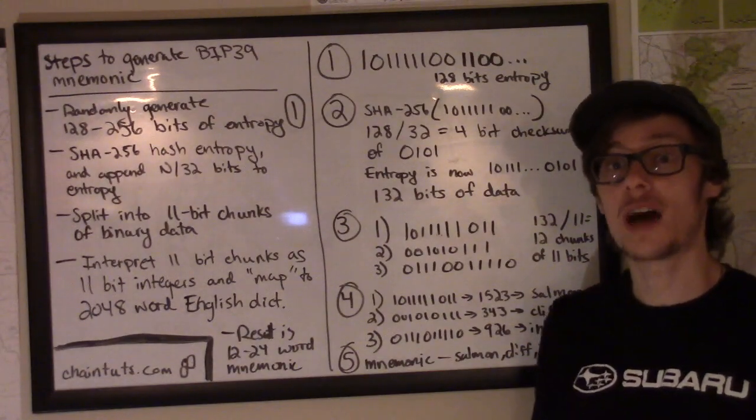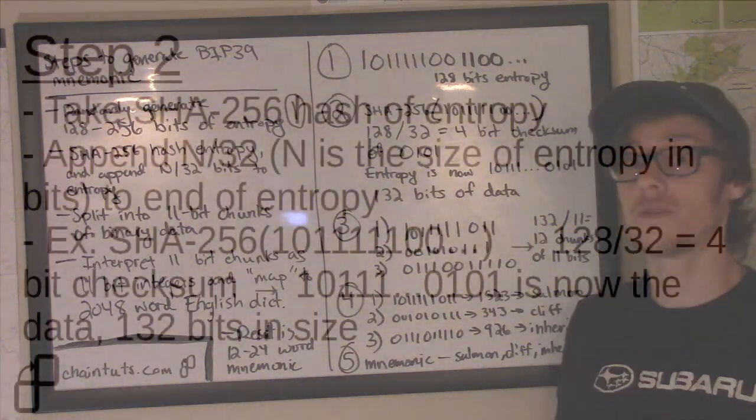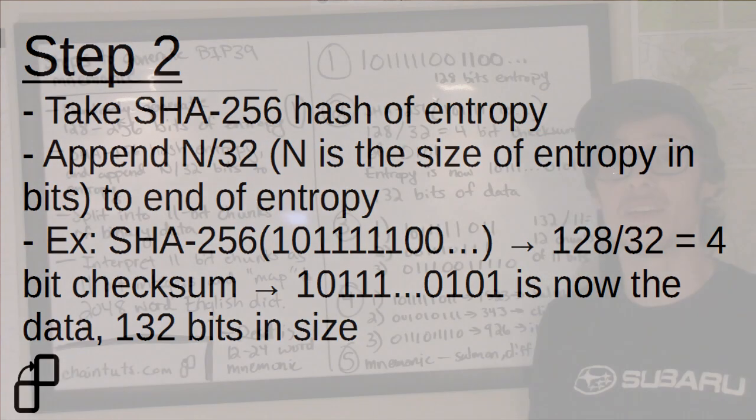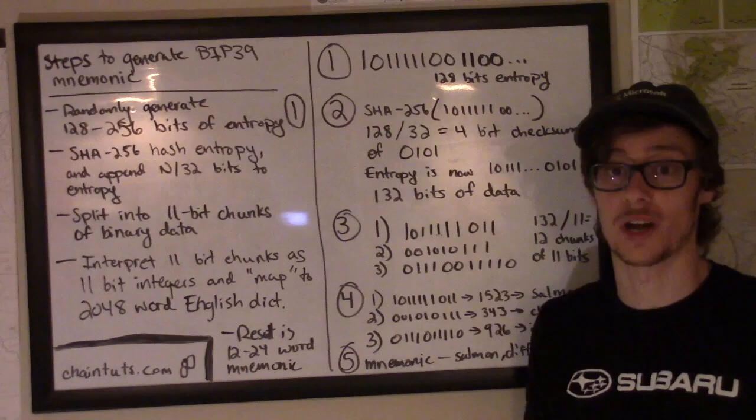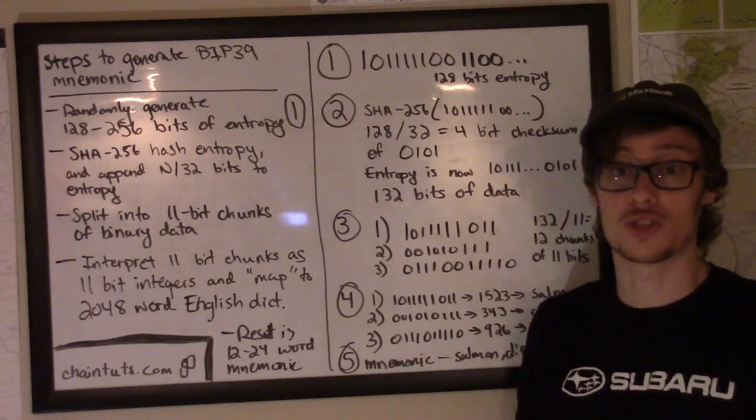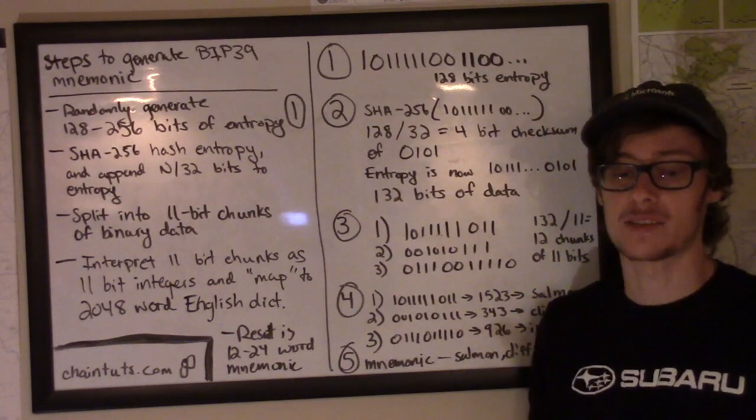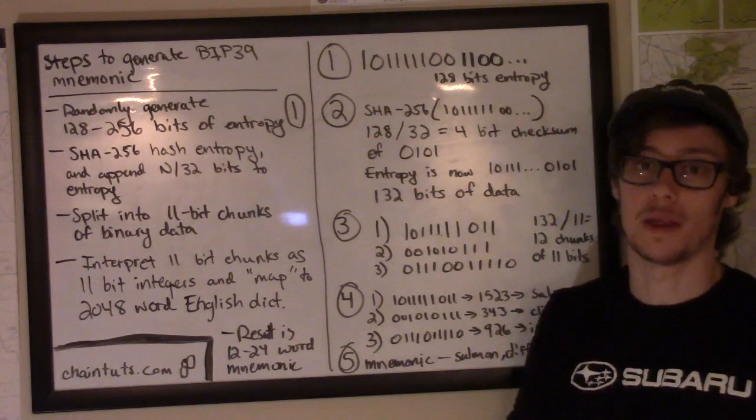The next step is to take the SHA-256 hash of all of that entropy and generate a checksum. This checksum is appended to the end of the entropy and it's used so that the wallet software can determine if this is indeed a valid seed to use for generating a mnemonic. It also uses this checksum to determine if the mnemonic is valid if it's being used as an imported wallet backup.